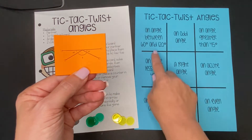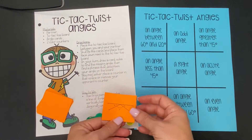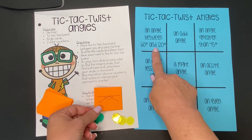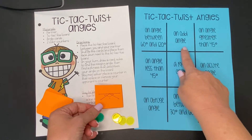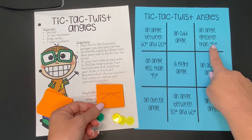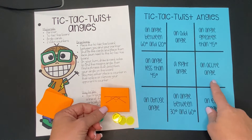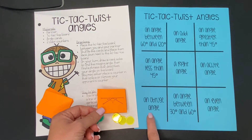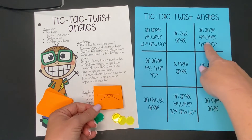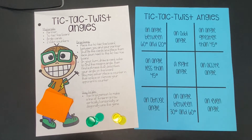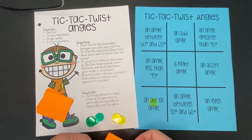So let me find something on the board that matches 120 degrees. I have options over here. It could be an angle between 60 and 120 — no, it doesn't match that. Odd angle — no. Greater than 45 — it works for that one. Not less than 45. It's not a right angle, not an acute angle. It is an obtuse angle or an even angle, so I have choices. I'm going to be yellow today and go with an obtuse angle — put my marker right there.